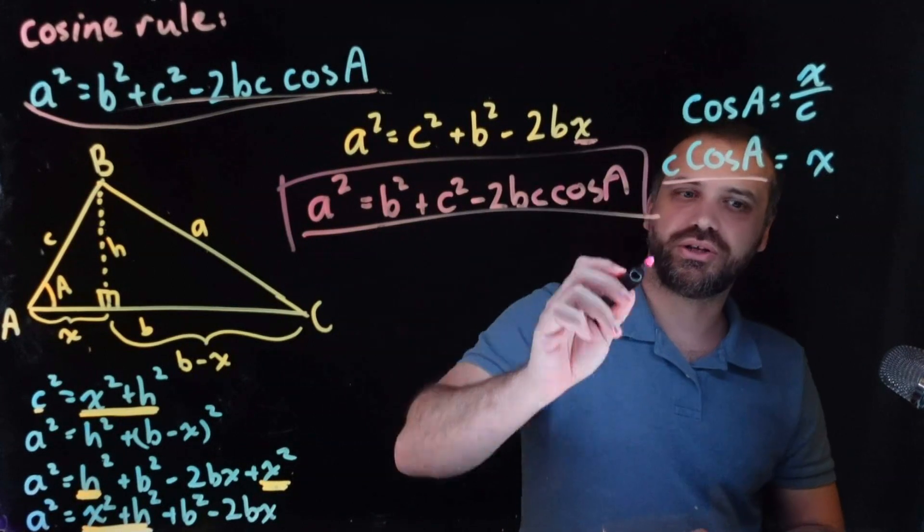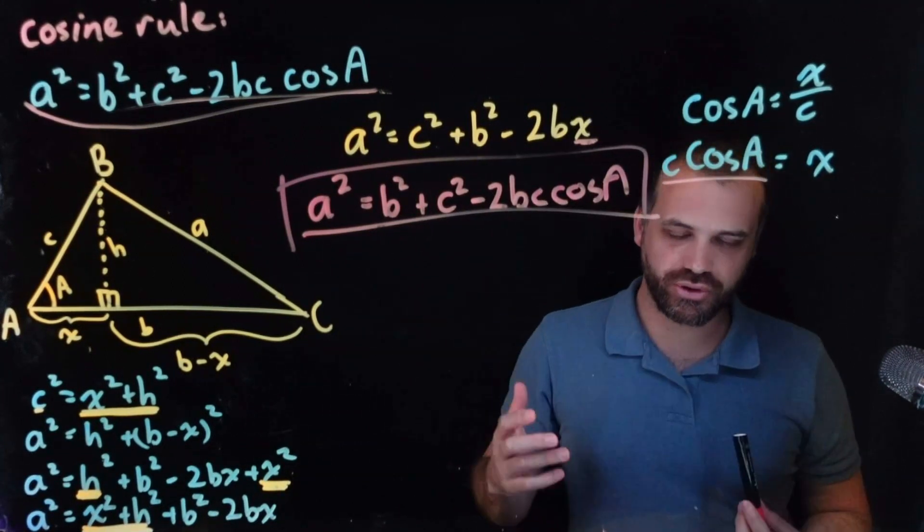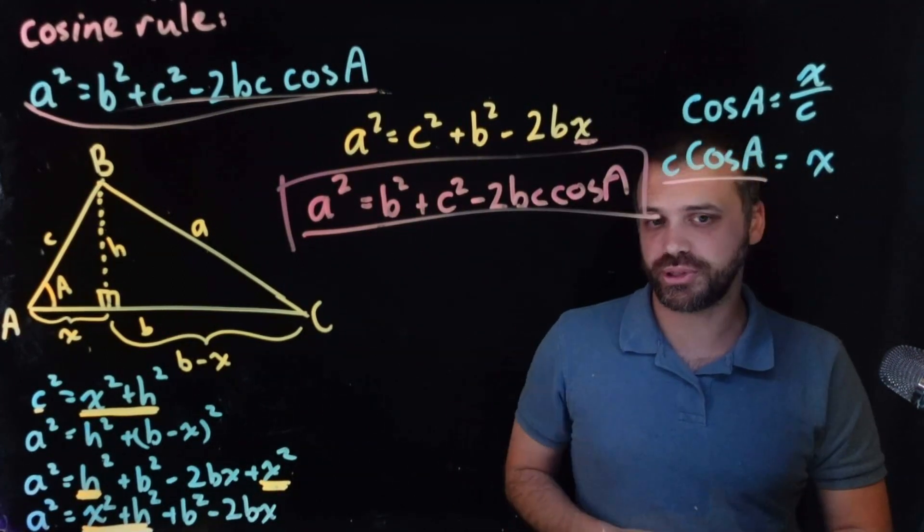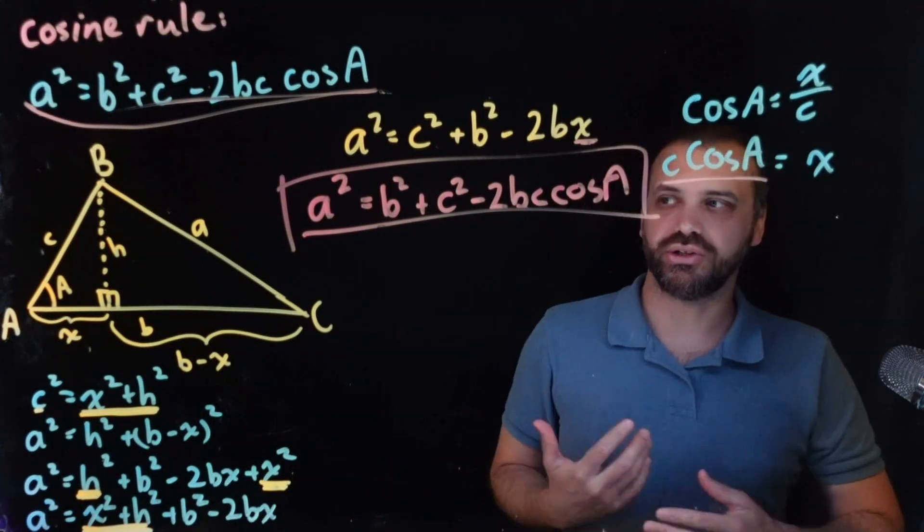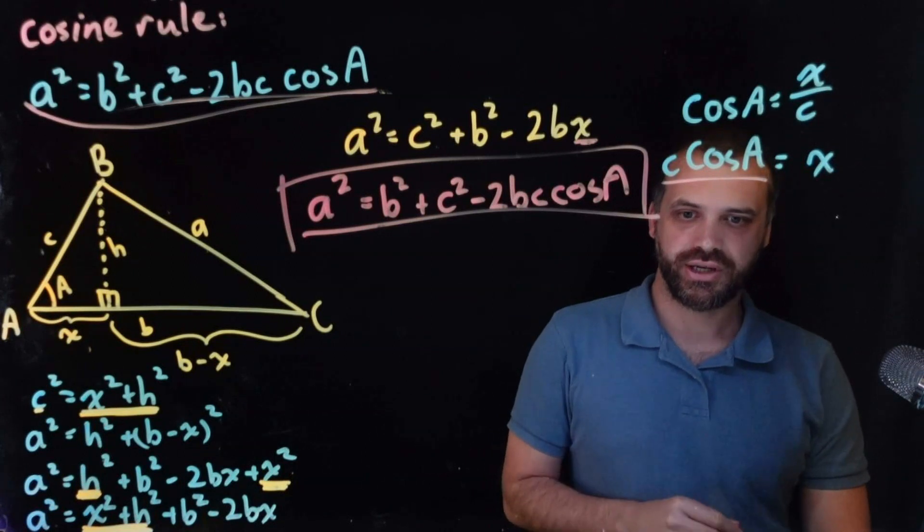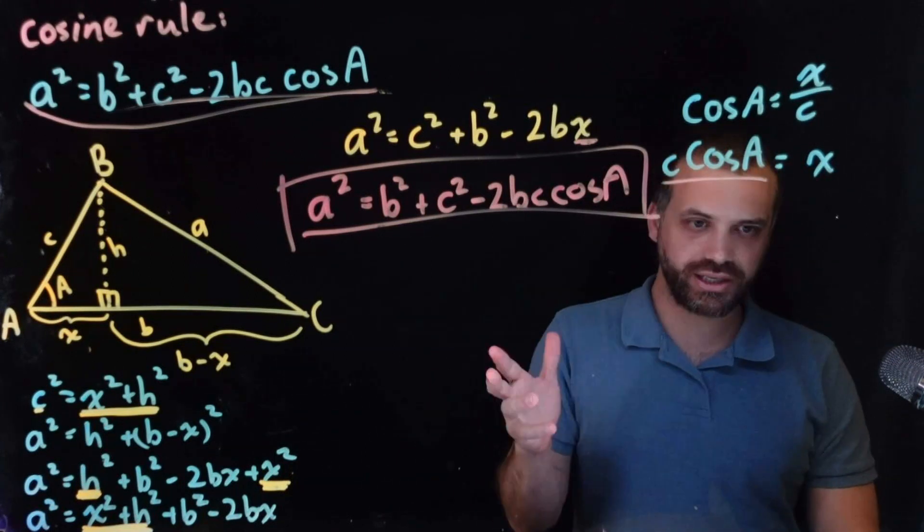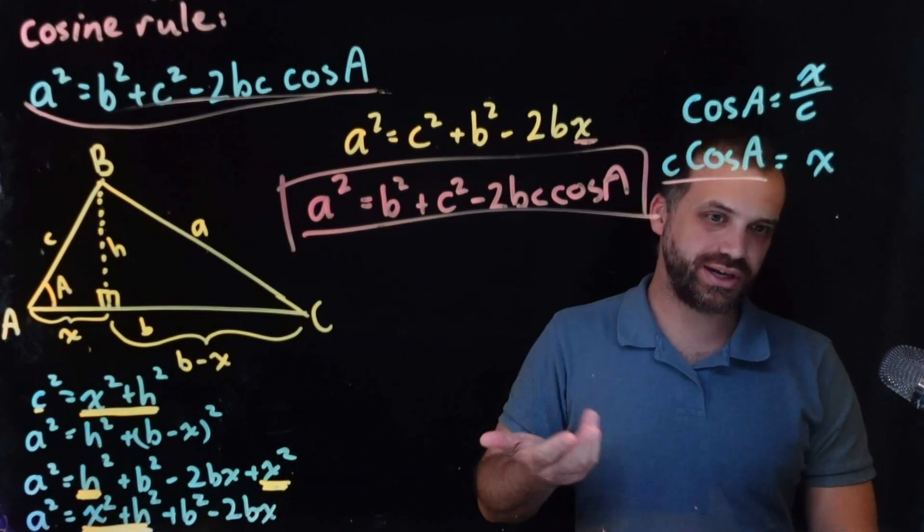This formula is one of those formulas that you memorize or you just have on your formula sheet, so you can always refer to it. But it is one that we're going to use a lot when it comes to triangles. That's the proof. That's how it works. Now let's just jump in and start doing stuff with it.